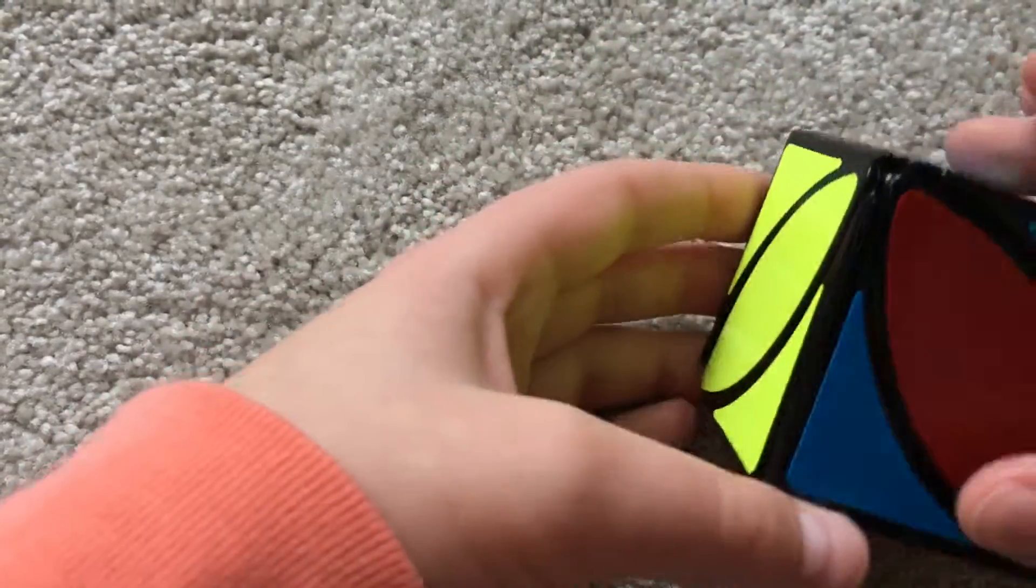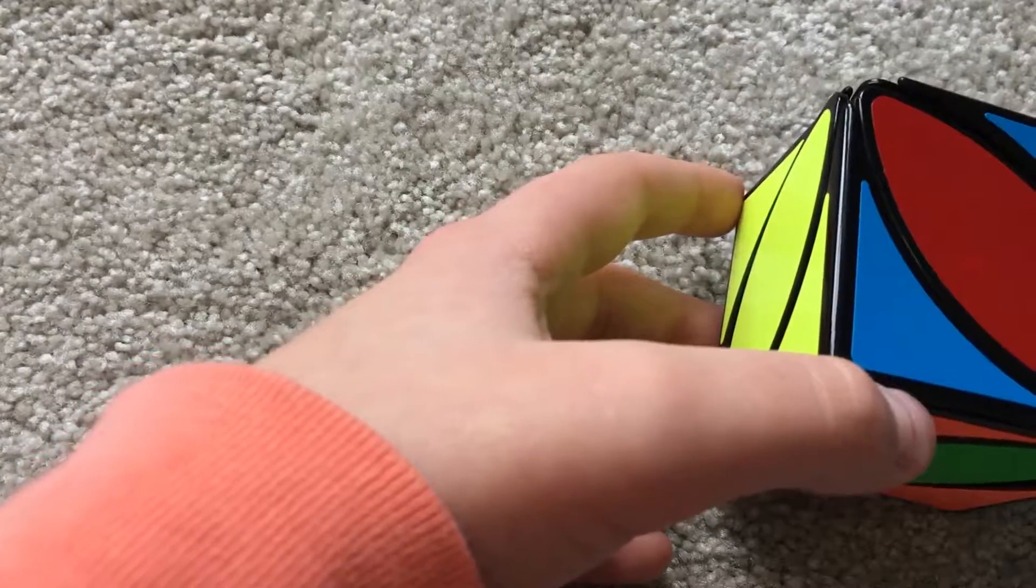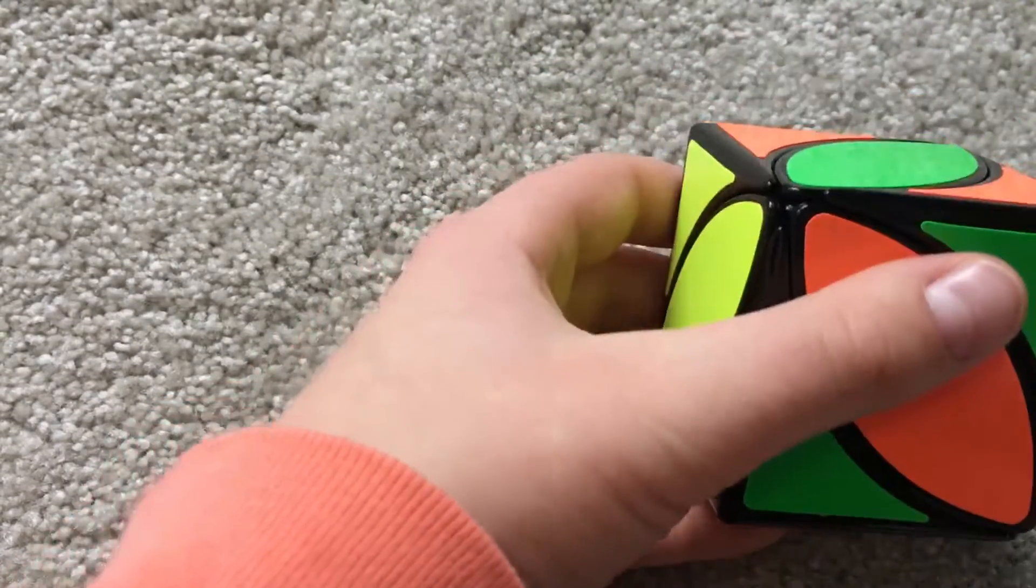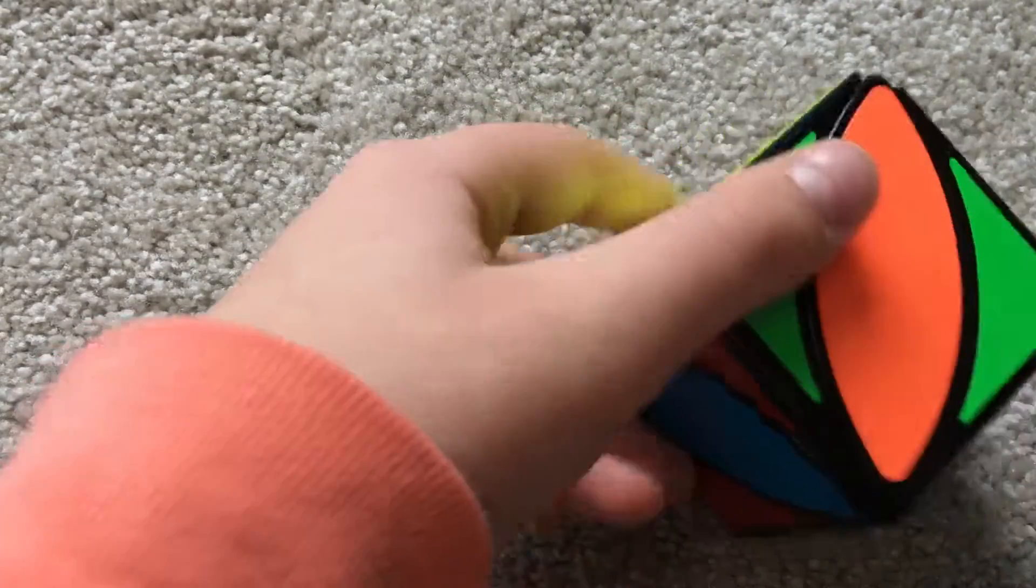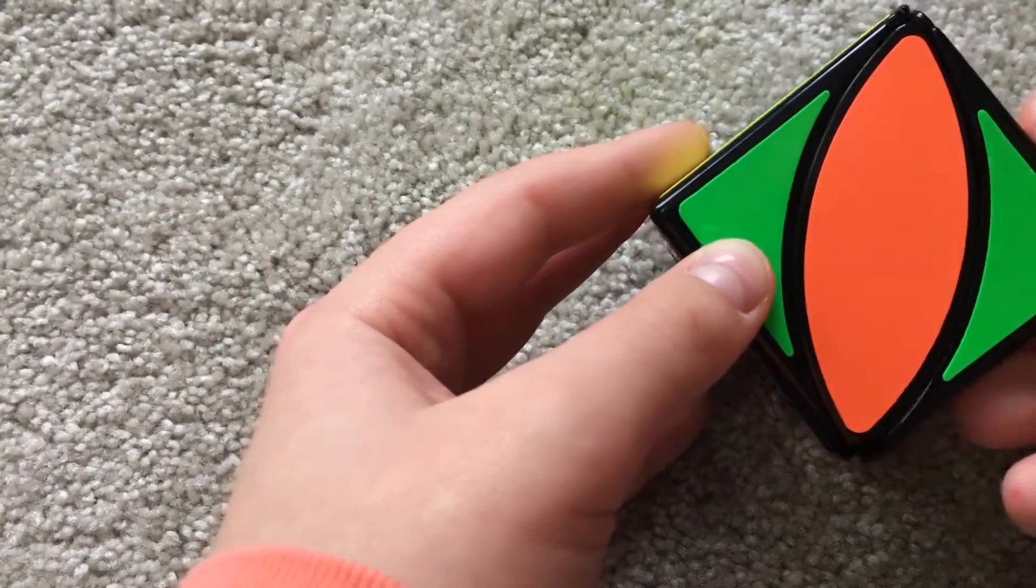And then we either have this case, or sort of like a U perm or an H perm. So we're going to go ahead and learn an algorithm here that's going to get you into a U perm. It's not only an algorithm as much as a set of moves, which is kind of the same thing.